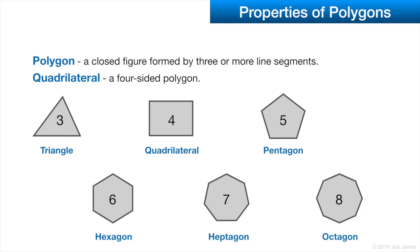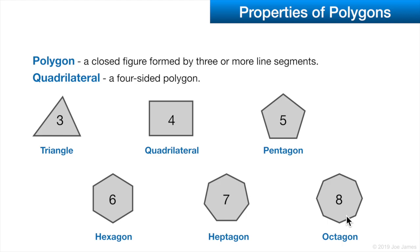A quadrilateral is a special polygon that has four sides. A three-sided polygon is called a triangle, four-sided is a quadrilateral, five is a pentagon, hexagon, heptagon, and octagon for eight sides.